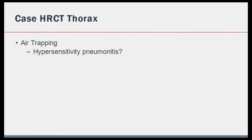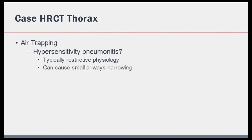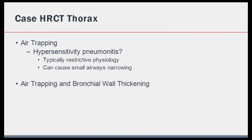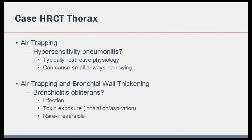Hypersensitivity pneumonitis is a complex syndrome of varying presentation and severity and not a single disease. Numerous inciting agents can induce this reaction, and while it is typically associated with a restrictive pattern on spirometry, it can have an obstructive picture due to small airway narrowing. In the context of air trapping with bronchial wall thickening, one would also consider bronchiolitis obliterans, also known as obliterative bronchiolitis — a clinical syndrome associated with injury to small airways caused by a myriad of infectious, inhalational and toxic exposures.